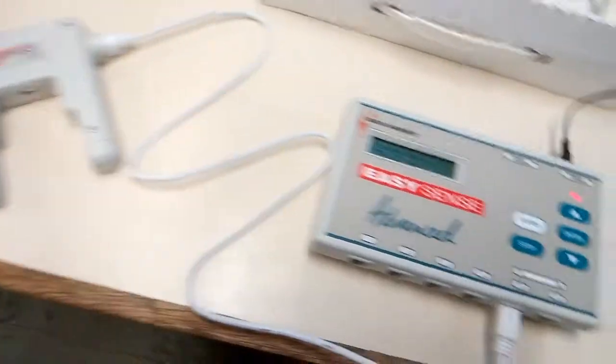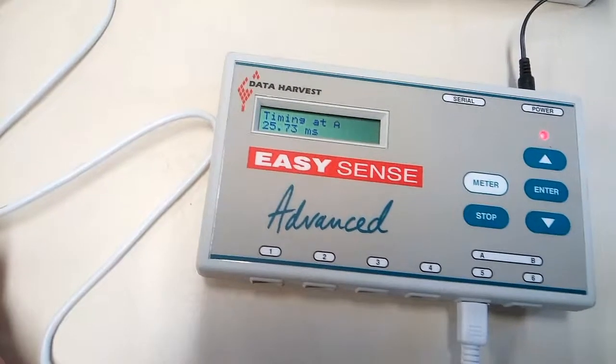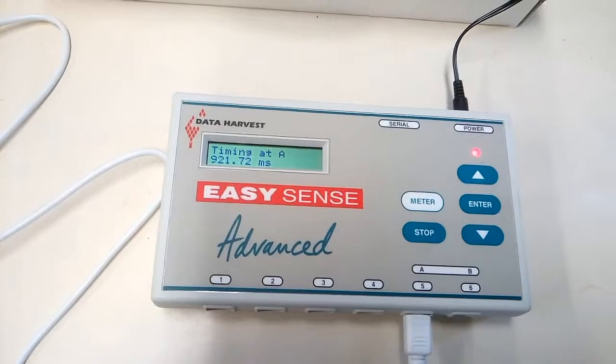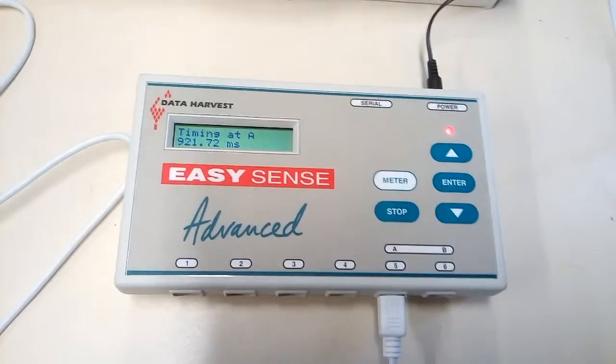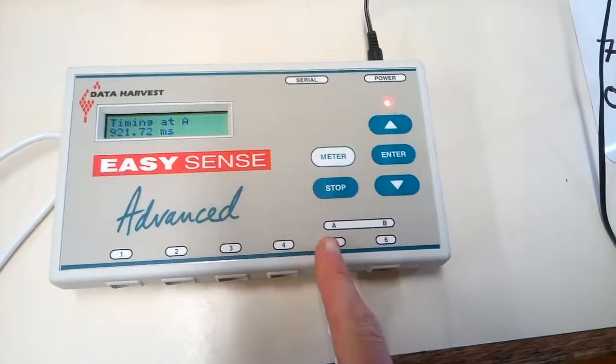So that's how we do timing at A. And you can see, if we just block that for a little bit, it will change and give different readings. We block it for a longer time, we obviously get a bigger reading there. That's the first thing we can use them for, for timing at A. And you've got to make sure that you're plugged into A.